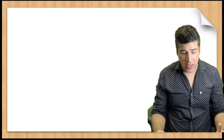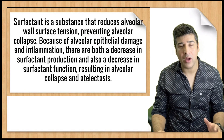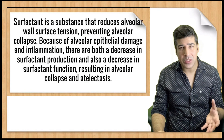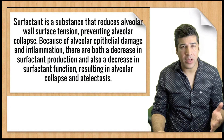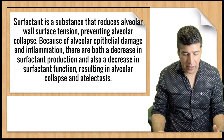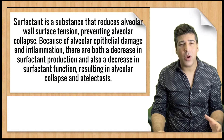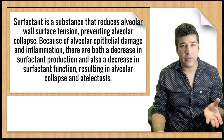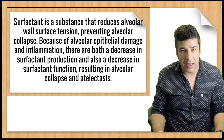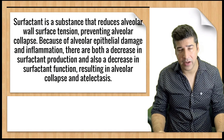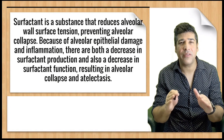Surfactant is the substance that reduces alveolar wall surface tension. It is produced by type II alveolar cells. In an ARDS patient, there is a reduction in surfactant production as well as compromise of surfactant function. With this loss of function and decreased production, there is an increase in surface tension, and alveolar surface tension reaches its peak.